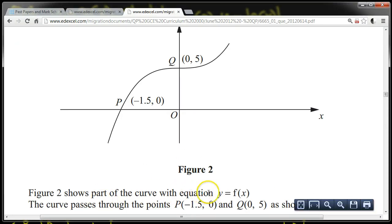Figure 2 shows part of the curve with equation y equals f of x. The curve passes through the point P at minus 1.5, 0 and Q at 0.5 as shown.